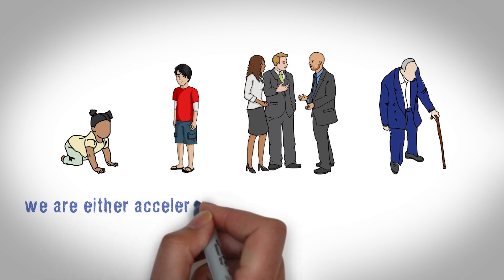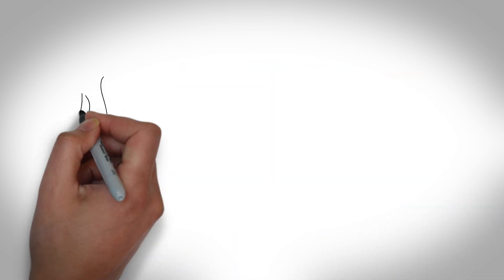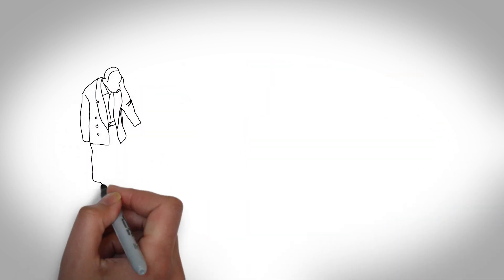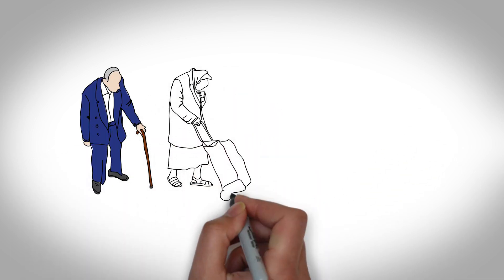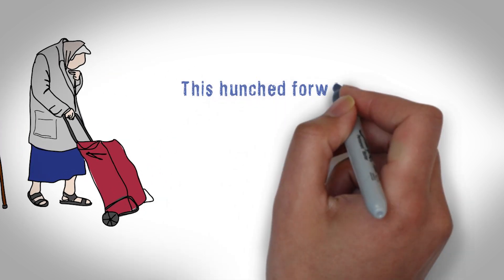When you imagine an older person, what comes to your mind? Do you picture someone who is hunched over and has gotten shorter over the years? Likely you do. This hunched forward posture, where the head goes down and forward and the shoulders round forward, is an indication of postural aging.